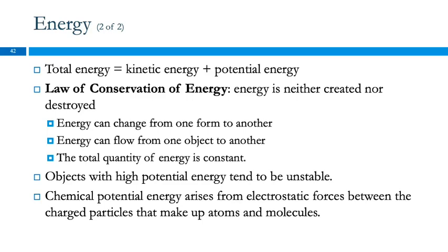So the total energy that an object has is its kinetic energy plus its potential energy. I mentioned the law of conservation of mass. There's also a law of conservation of energy. Energy is neither created nor destroyed. We can transform energy from one form to another. Energy can flow from one object to another. But the total quantity of energy in the universe is constant. You can't create energy. You can just transform it from one form to another.